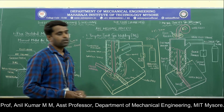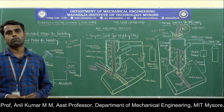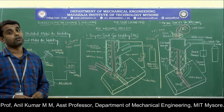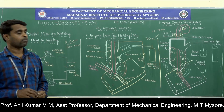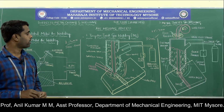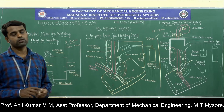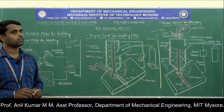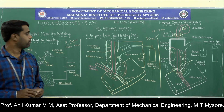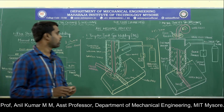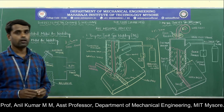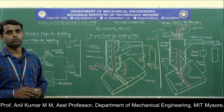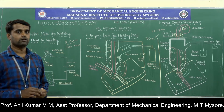Coming to the applications, MIG welding is suitable for welding thick metal pieces greater than 4 mm. It is used in sheet metal industries, shipbuilding, and automobile industries.